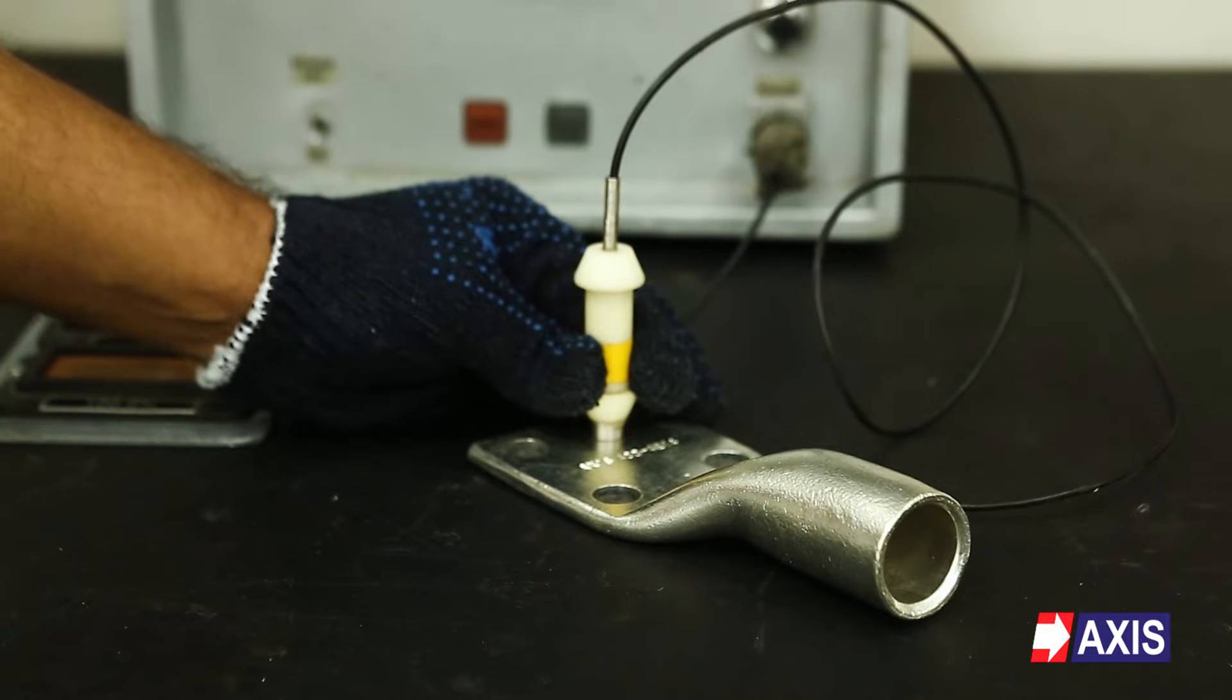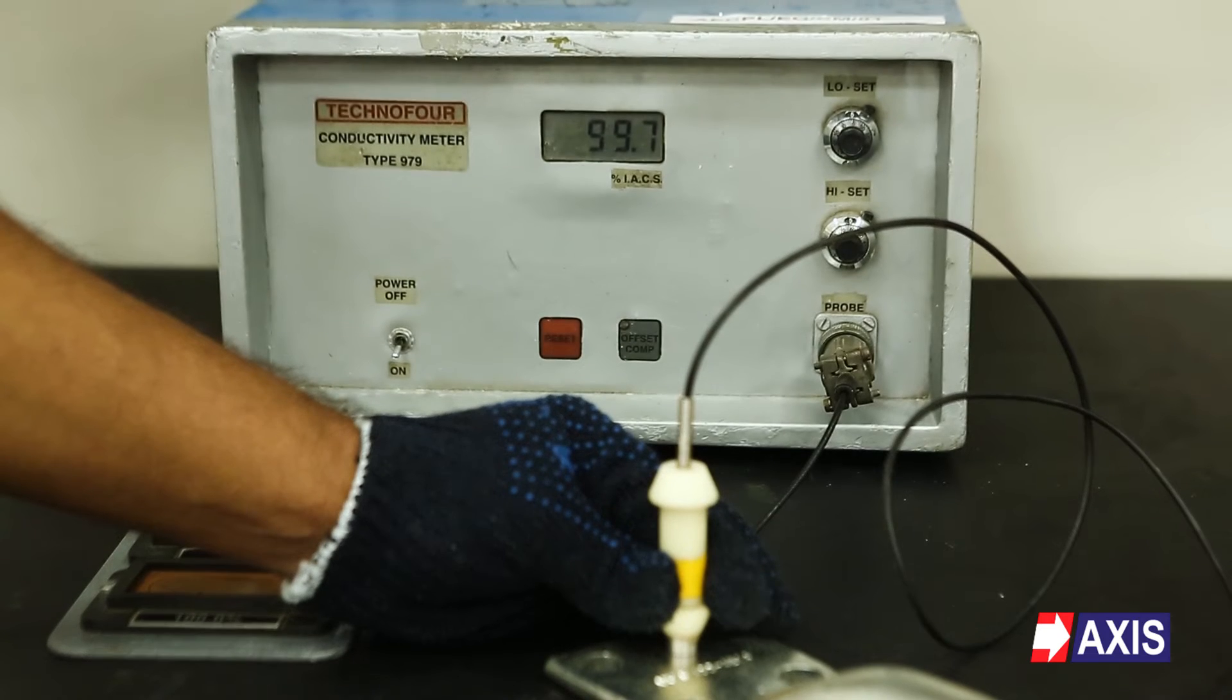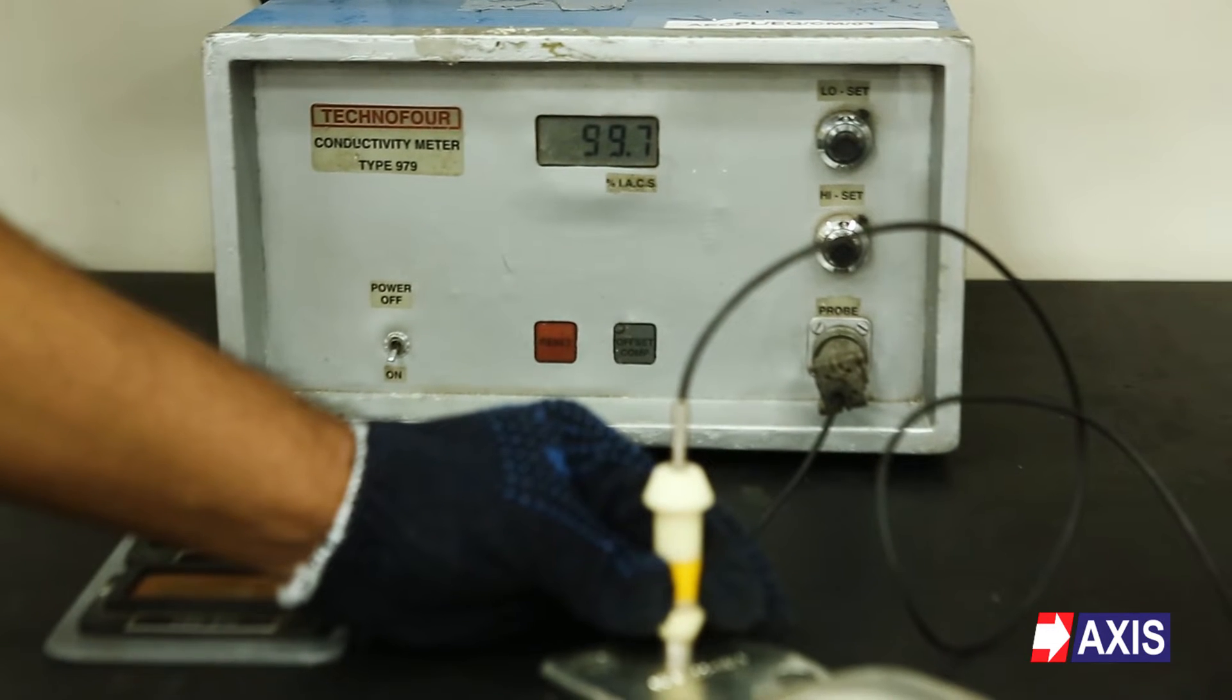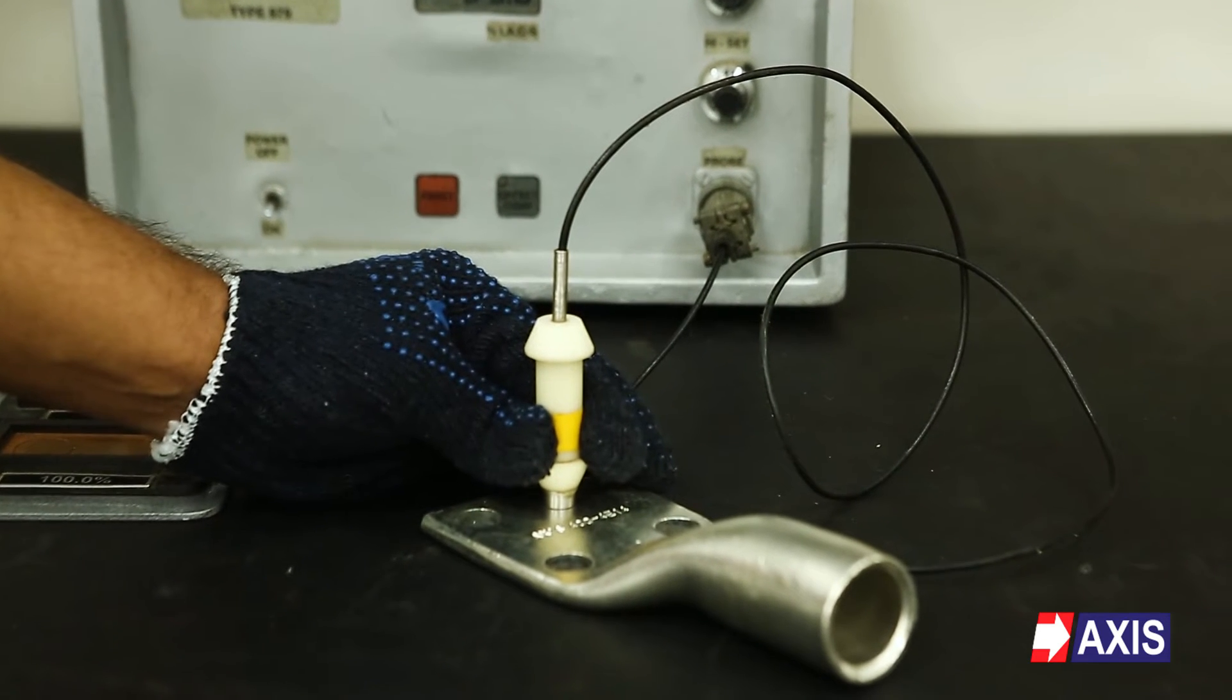We can also see that the Axis copper lugs have an electrical conductivity of 99% IACS. This indicates the raw material used to manufacture Axis cable lugs has high conductivity and uses pure copper material.